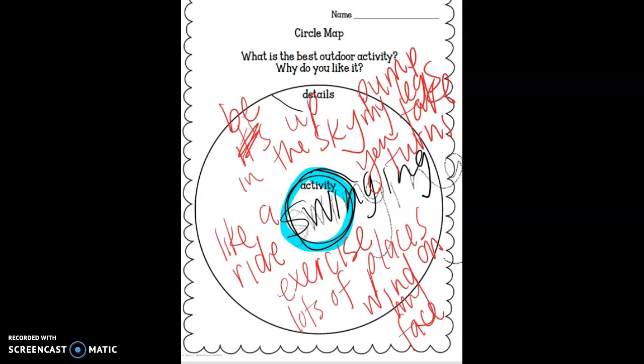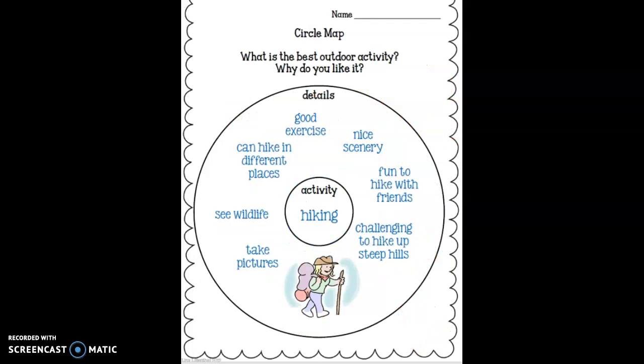So, maybe yours will be swimming. Maybe yours is walking a dog. And there are lots of different reasons why that would be the best. So, in this example that they give you, they say hiking is the best. And here are the reasons. It's good exercise. You can hike in different places. See wildlife, so animals. Take pictures. Challenging to hike up steep hills. Fun to hike with friends. And nice scenery.